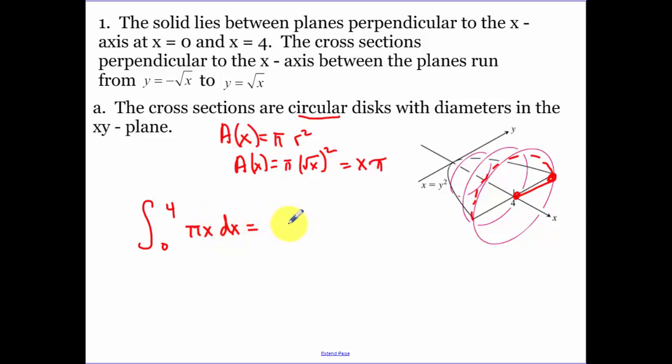Now I take the integral of that. Pi is just a constant, so that's pi over 2 x squared from zero to four. When I simplify that, we have 16 pi over 2, which happens to be 8 pi.